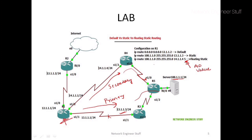To achieve this, we configure another static route as a floating static route with an AD value of five. The command is similar: ip route, destination network, next hop — with the AD value appended. For the primary route the next hop is 13.1.1.3, and for the secondary route the next hop is 14.1.1.4. The secondary route only becomes active if the primary goes down.